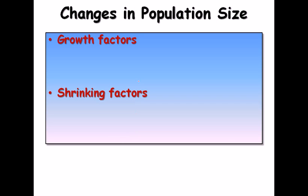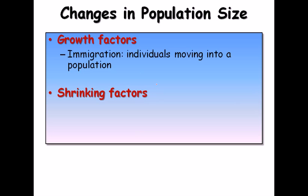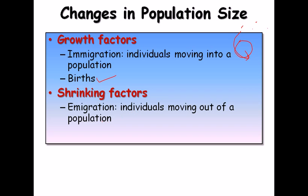Now let's look at changes in population size. There are growth factors and shrinking factors. Growth factors include immigration — individuals moving into a population — and births, which increase the number of organisms. Shrinking factors include emigration — individuals moving out of the population — and deaths, which naturally decrease the population size.